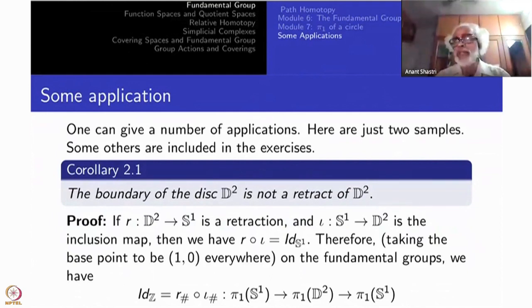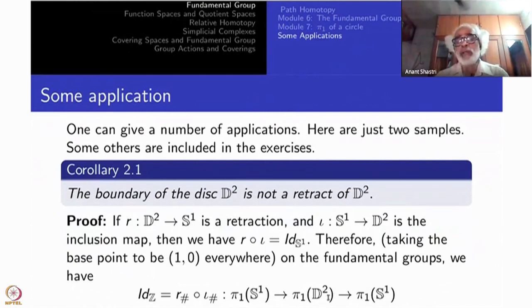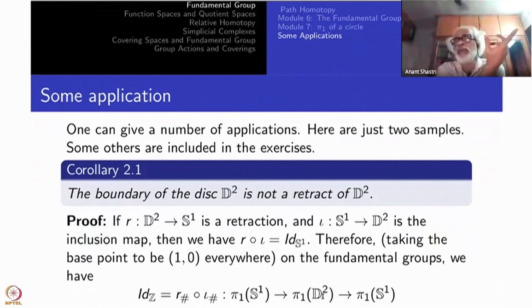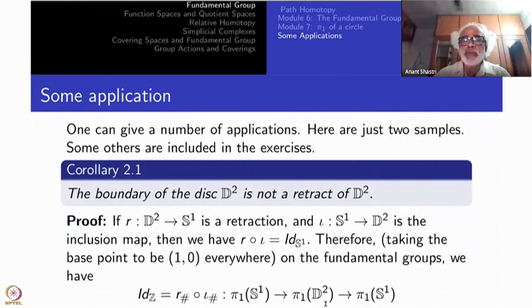Now there is a contradiction to the algebraic fact. The two end groups — π₁(S¹) on each side — are infinite cyclic groups. The middle one, π₁(D²), is trivial because D² is a convex set. Any homomorphism from an infinite cyclic group through a trivial group back is a trivial map, so the composite will be trivial. But we need it to be the identity of ℤ. The identity map on an infinite cyclic group is non-trivial — that is a contradiction.